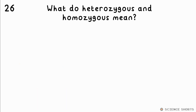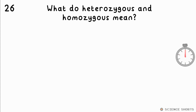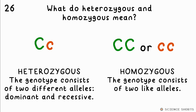What do homozygous and heterozygous mean? These refer to the two alleles for a certain gene an organism has. In our last example, the two parents had heterozygous alleles — they're different; hetero means different. If the child had cc or CC, these would both be homozygous instead.